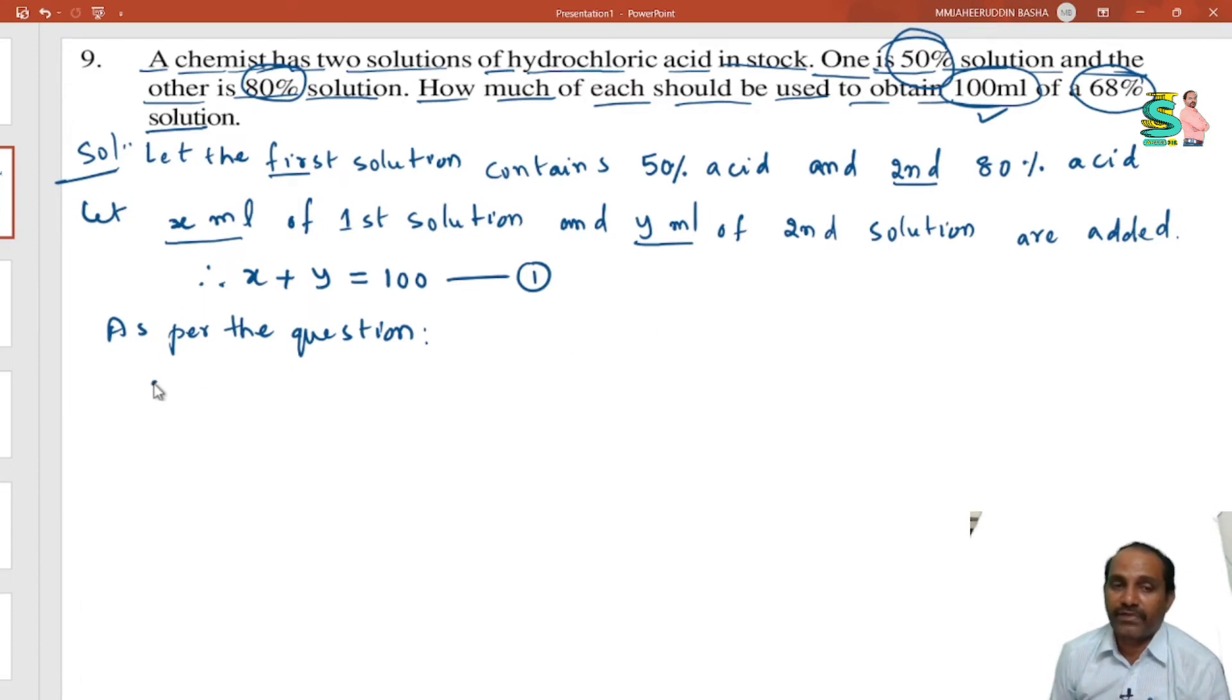That is why 50 percent of first solution plus 80 percent of second solution y is equal to 68 percent. Is it understood? This one is most important step.